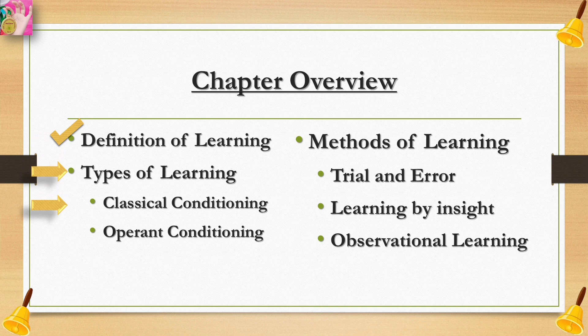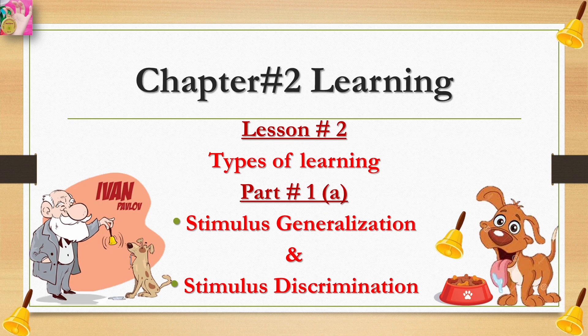In the types of learning, we also learned about classical conditioning. We learned about Pavlov and his experiments with dogs and how he came up with the concept of classical conditioning. We also learned about the different elements and basic principles of classical conditioning. If you missed any previous lecture, I've given all the links in the description section. Today's lesson is Chapter Two, Lesson Two, Part 1A: Stimulus Generalization and Stimulus Discrimination.